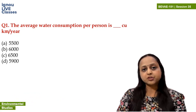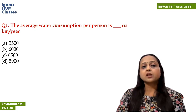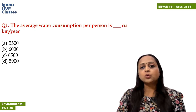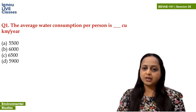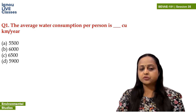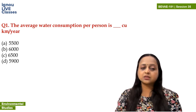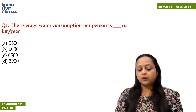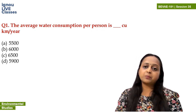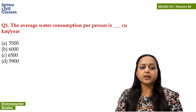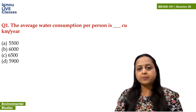The average water consumption per person is blank cubic kilometers per year. So in the whole year, how much water consumption per capita per person — you have to tell. This is a very straightforward question; you just have to remember the answer. Obviously, we use water for drinking, for bathing, for washing. So there are a lot of options in cubic kilometers.